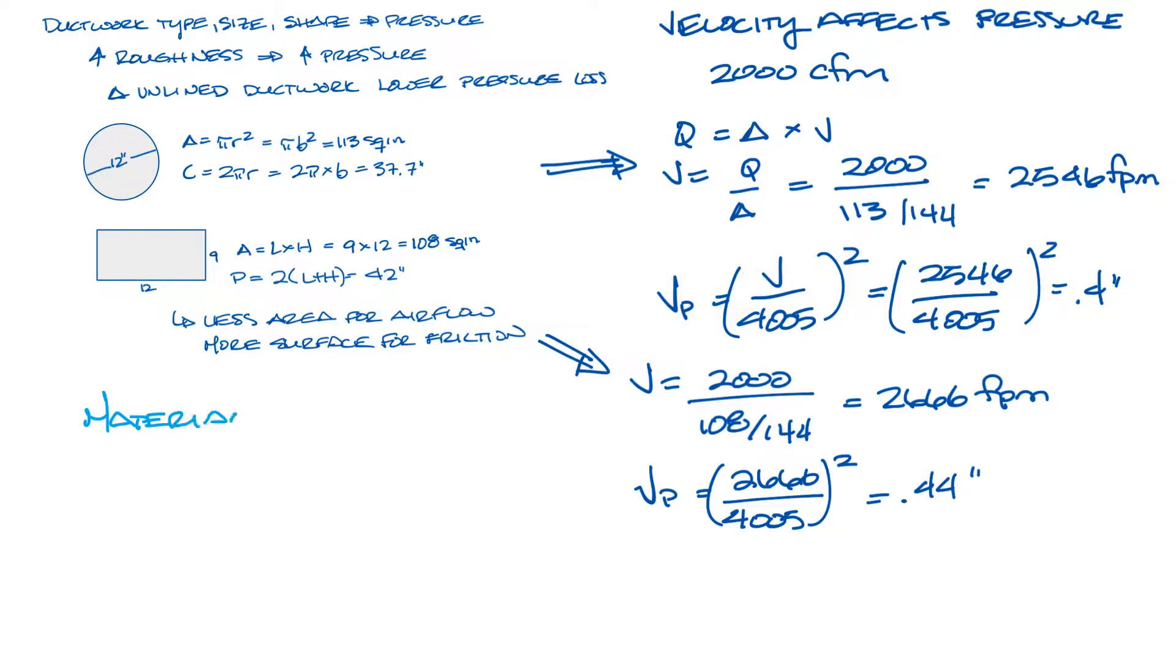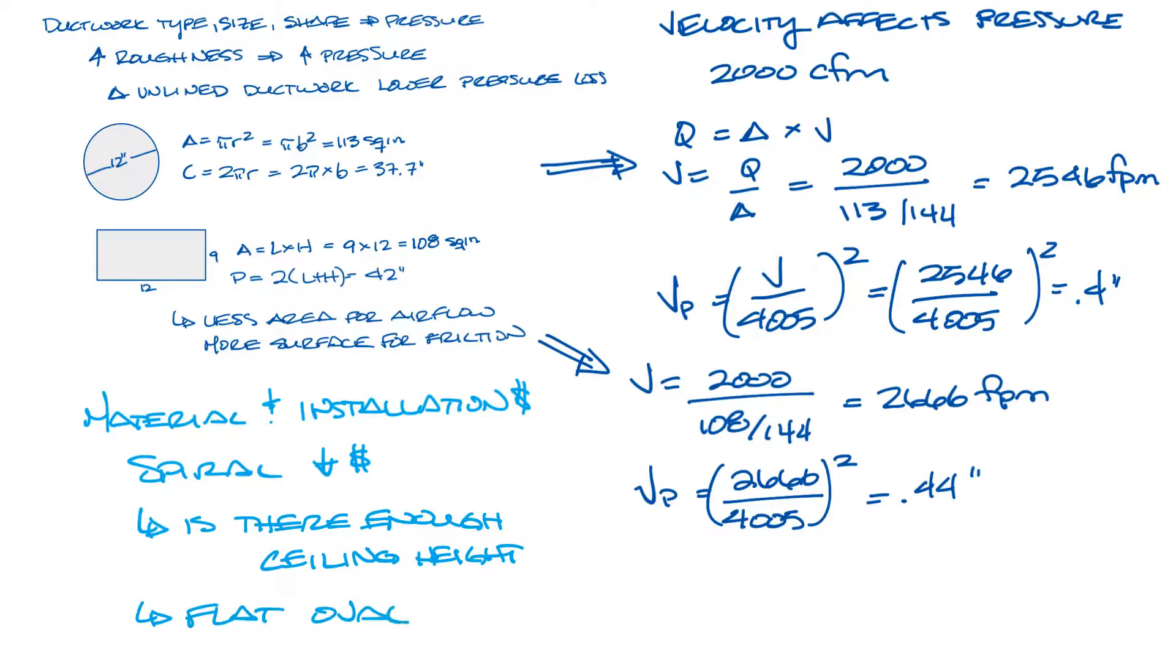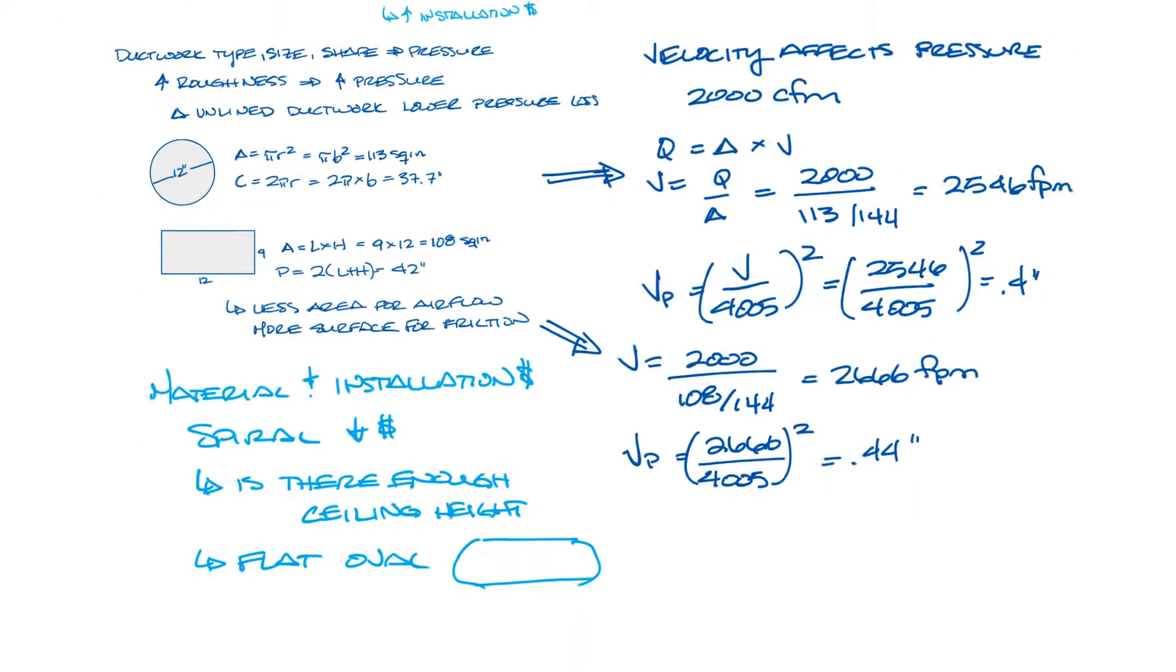You also have to consider the material and installation cost. Spiral duct may be less expensive and requires less ceiling, so it may be a better option all around in this example. But what if you were comparing 24 inch spiral to a rectangular duct? In this case, you may not have enough ceiling height to install the 24 inch spiral, so you would have to make a decision about using a less tall rectangular ductwork or a flat oval, and that might be your best option.